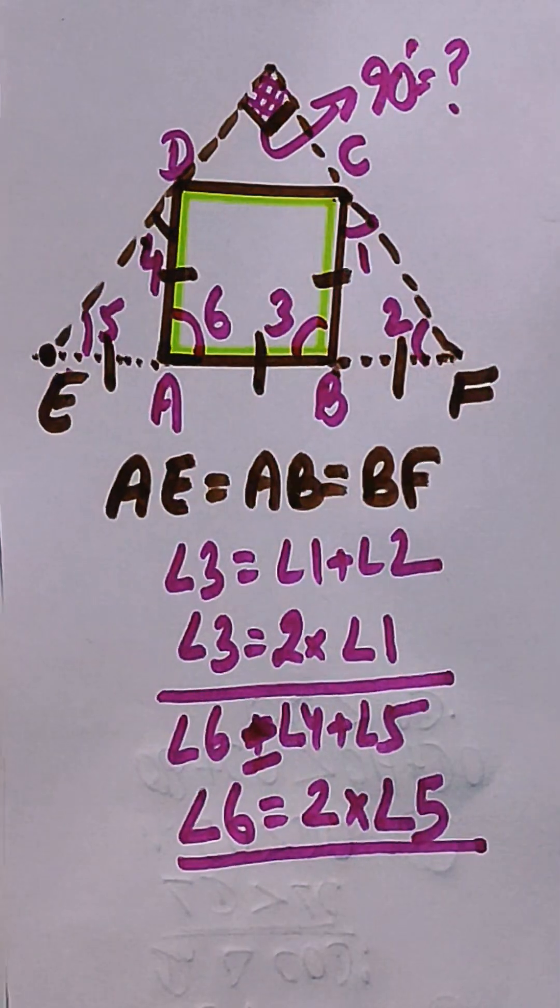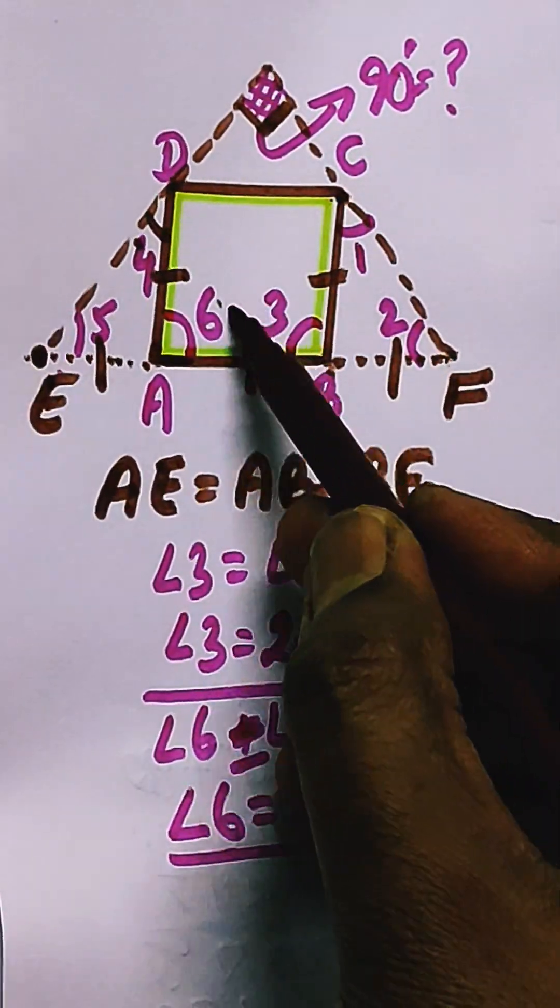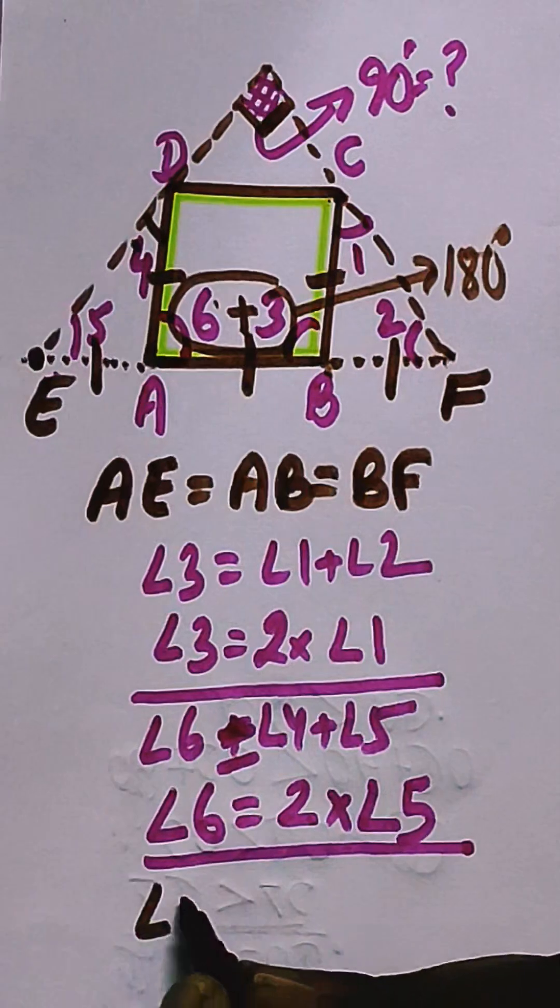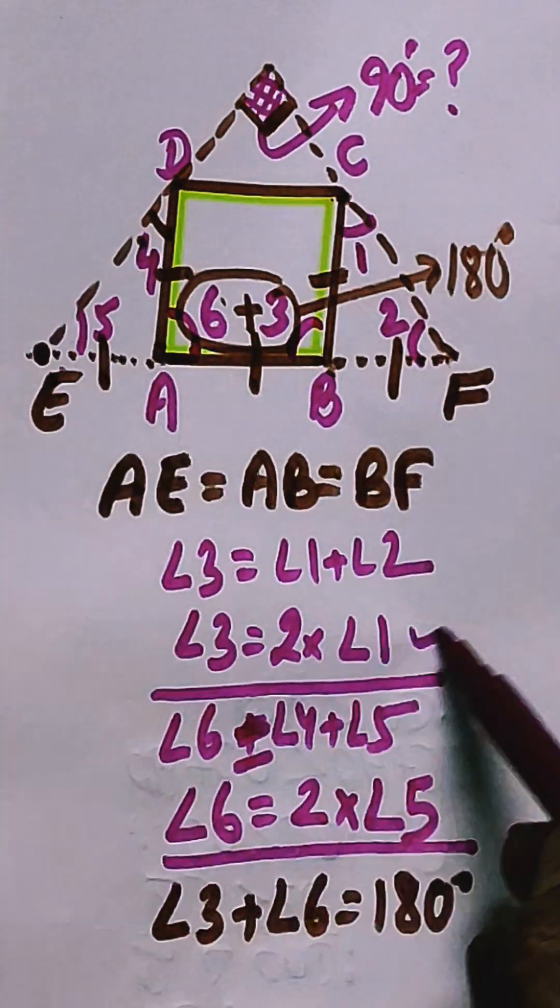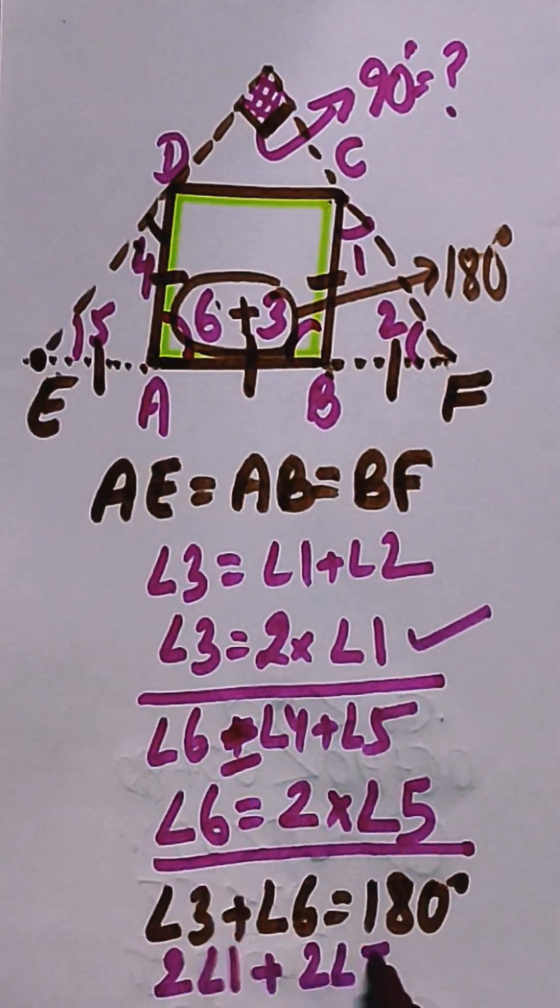Now since AD and BC are parallel to each other and AB is the transversal, then angle 6 plus angle 3 both add to form 180 degrees. So angle 3 plus angle 6 equals 180 degrees. Angle 3 equals 2 times angle 1, so 2 times angle 1 plus 2 times angle 5 equals 180 degrees. This gives you angle 1 plus angle 5 equals 90 degrees.